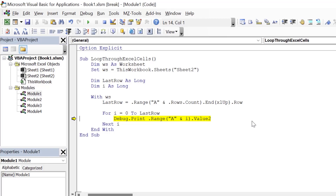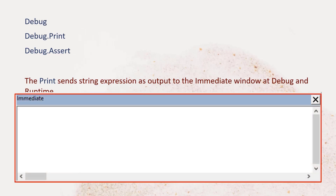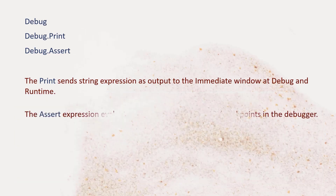So what exactly is happening here? The line has been highlighted in yellow. I am using debug to show the content of the cell in the immediate window. So before we go ahead, let's understand the syntax of the debug object, as this is an essential part of debugging. The debug object has two methods: print and assert. Debug.Print sends a string expression as output to the immediate window at debug runtime. The immediate window is visible — press Ctrl+G if you don't see it. The assert expression evaluates an expression and if false, breakpoints in the debugger. We will cover this later in the video.